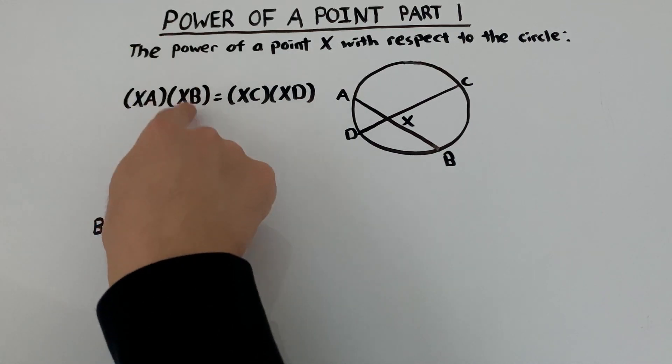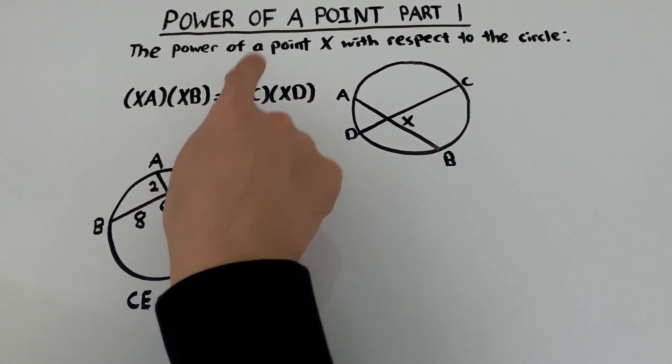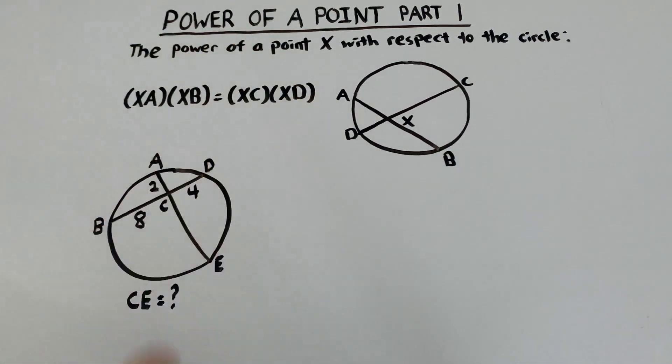So xa times xb equals xc times xd. And this is true for any point x in the circle. I repeat, any point. So you should think to use this when you have problems involving a circle and line segments.